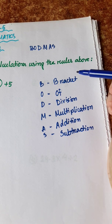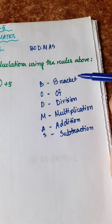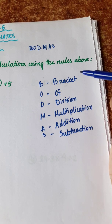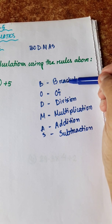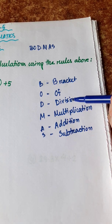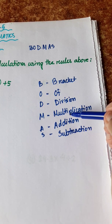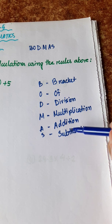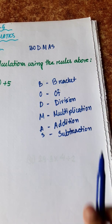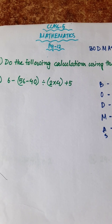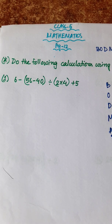Which is the one that we have to do first? We have the bracket first — because the bracket is first priority. First bracket, then second, then third bracket. After brackets there is division, then multiplication, then addition, then subtraction. So let's do number 1.